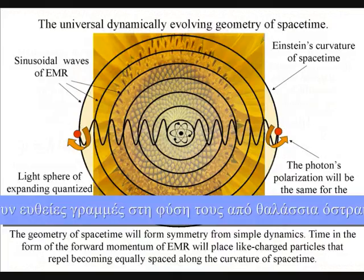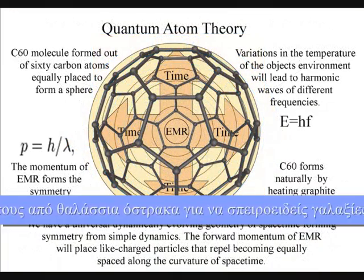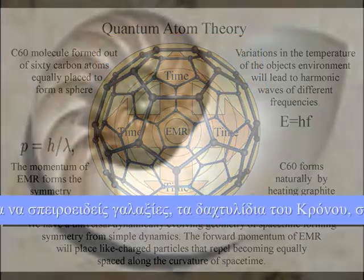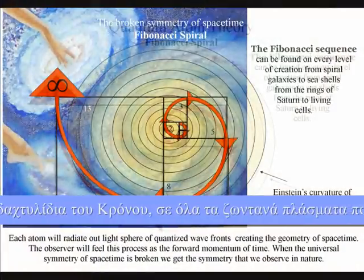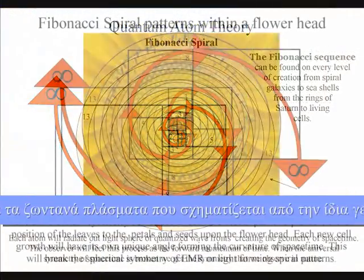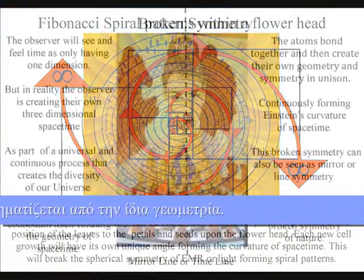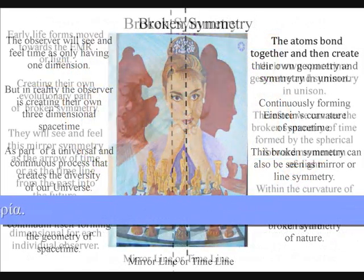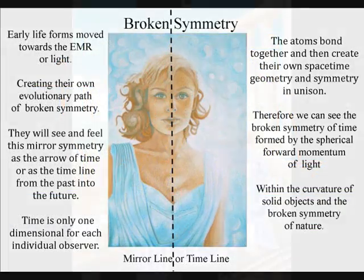We can see a continuous process of symmetry forming and breaking, from seashells to spiral galaxies, to the evolution of life itself. This process is formed by the momentum of light forming the arrow of time, and the geometry of spacetime.